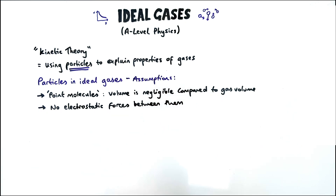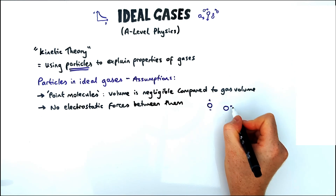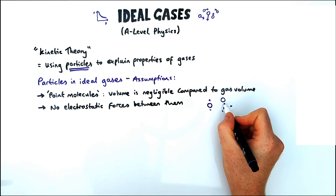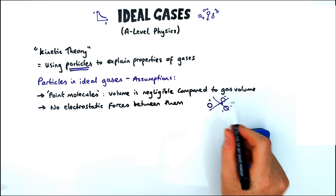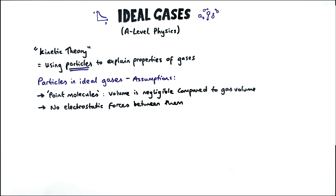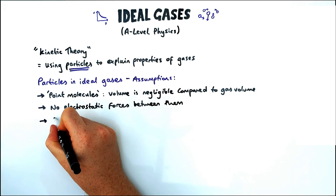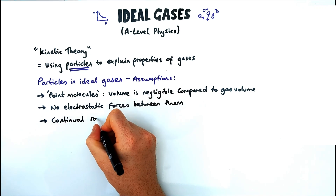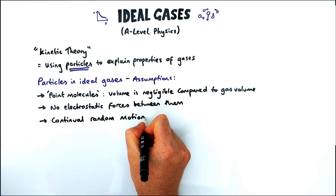The next assumption is that there are no electrostatic forces between the molecules or between the particles. If you study A-level chemistry, you'll know about polar molecules and London forces, but we don't worry about that at A-level physics. Particles are also moving in continual random motion — left, right, up, down — with a different range of speeds.